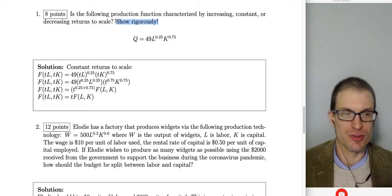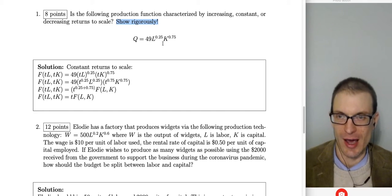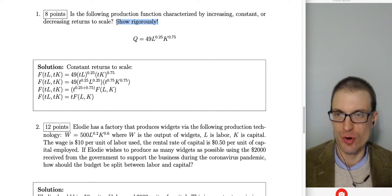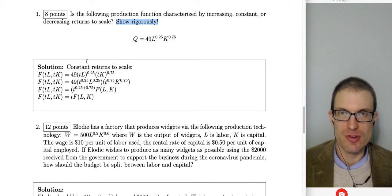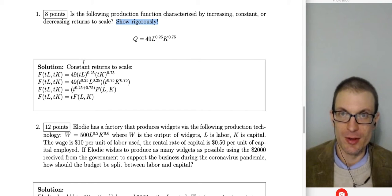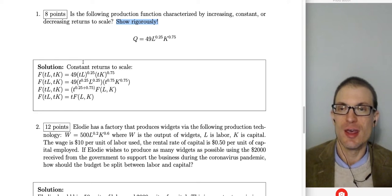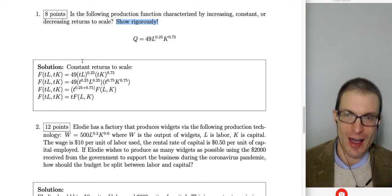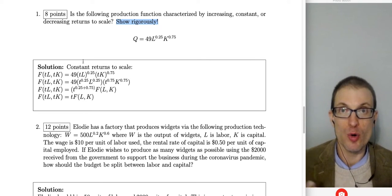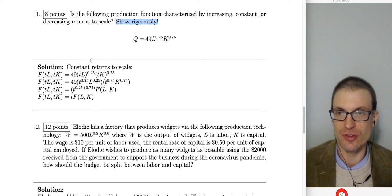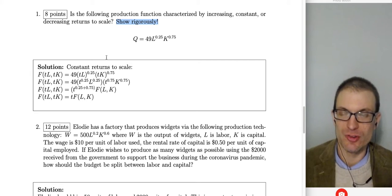That's not showing it rigorously — that's recognizing it's constant returns to scale, but we want to show it rigorously. The definition of constant returns to scale means if we multiply the inputs by some factor, that's the same as multiplying the output. If you double the inputs and get exactly double the output, that's constant returns to scale. More than double is increasing; less than double is decreasing returns to scale.